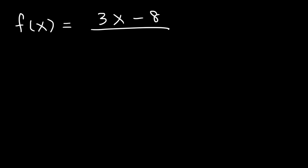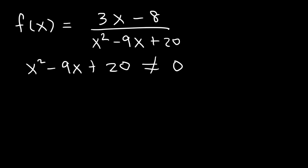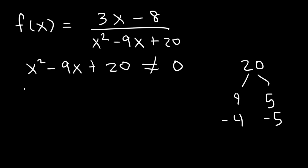Let's try another example. Let's say we have 3x minus 8 divided by x squared minus 9x plus 20. We have another rational function, as seen by the fraction. So what we need to do, just like before, is set the denominator not equal to 0. So x squared minus 9x plus 20 cannot equal 0. To find the x values that will produce a 0 in the denominator, we need to factor this trinomial. Find two numbers that multiply to 20 but add to negative 9. We know 4 times 5 is 20, but they add to 9, so we use negative 4 and negative 5, which still multiply to positive 20 but add to negative 9.